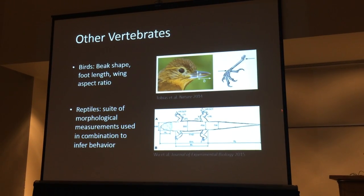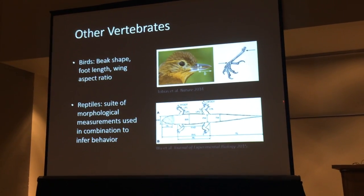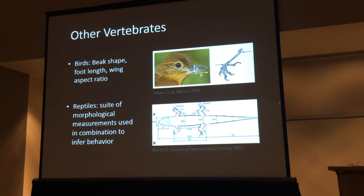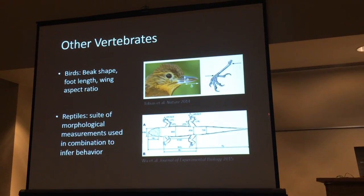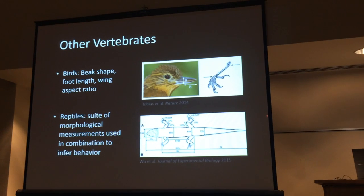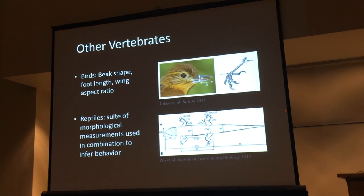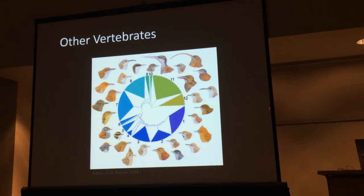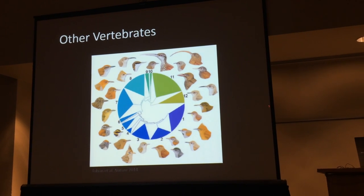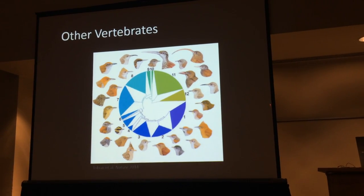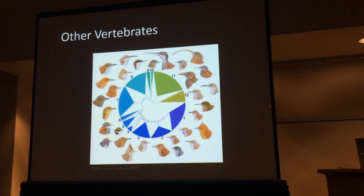Such as in birds, simple beak shape, tarsus length, and wing aspect ratio can infer something about the level of the canopy that a bird flies around in. Or in reptiles, squamates have a system of morphological measurements that are pretty standardized, used across various groups like skinks or more famously anolis lizards. And these have helped explain large macroevolutionary patterns, such as how species interactions drive phenotypic variation or convergent evolution across different island systems.